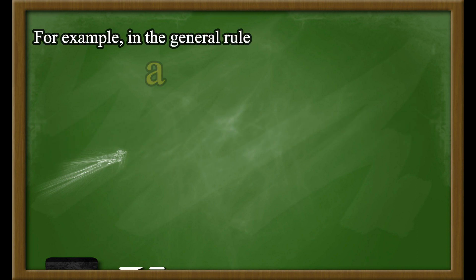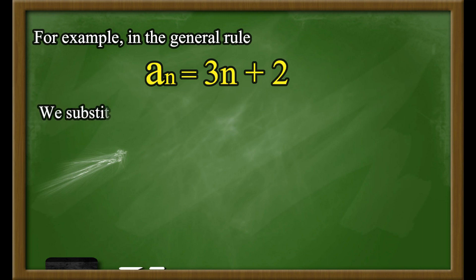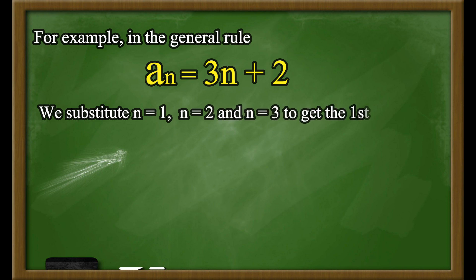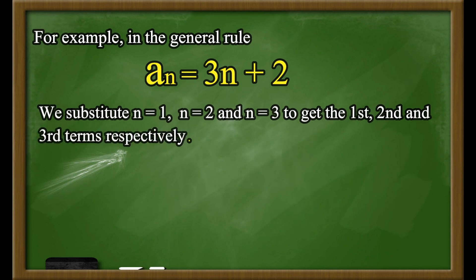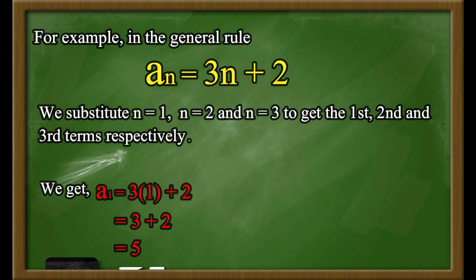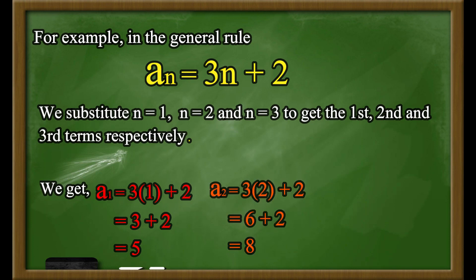For example, in the general rule A sub n is equal to 3n plus 2, we substitute n equals 1, n equals 2, and n equals 3 to get the first, second, and third terms respectively. After substituting, we get A sub 1 equals 5, A sub 2 equals 8, and A sub 3 equals 11.